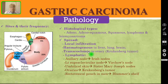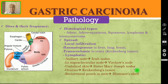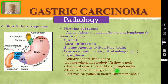The lymphatic spread going to the axillary node is called Irish nodes. If it goes to the left supraclavicular node, that is called Virchow's node — this is Troisier's sign. If it goes to the umbilical skin, that is called Sister Mary Joseph nodes — this is not a lymph node enlargement but a secondary deposit in the umbilical skin. If lymphatic secondaries go to the ovaries, that is called Krukenberg's tumour, which is more common in pre-menopausal ovaries. In men, it can deposit in the rectovesical pouch, known as Blumer's shelf.